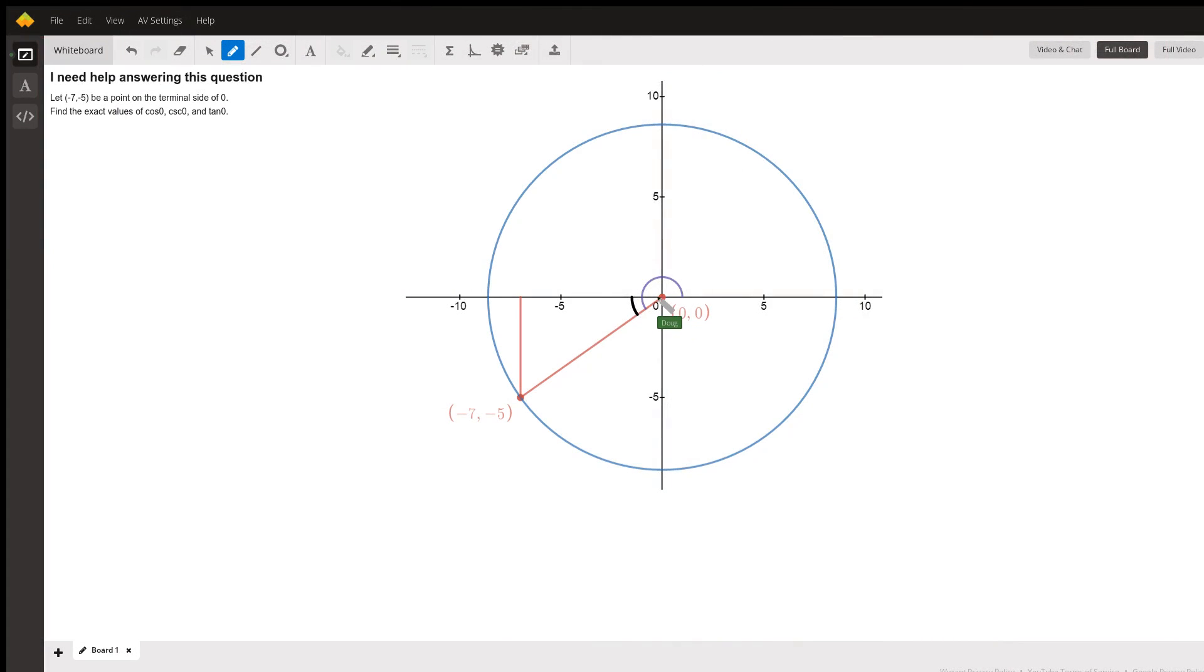Here I've drawn a line segment from the origin to the point negative seven, negative five. We can think of the angle that was created as rotating from the positive x-axis in a counterclockwise direction until we hit that line, and that's the angle that I think you're calling theta here.